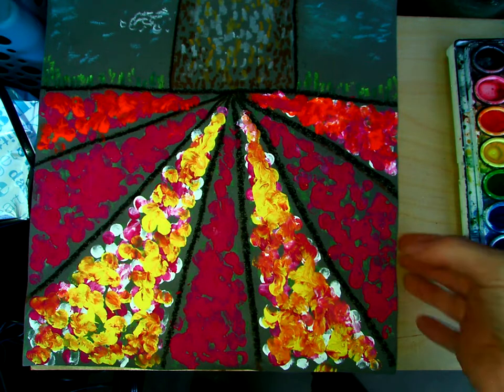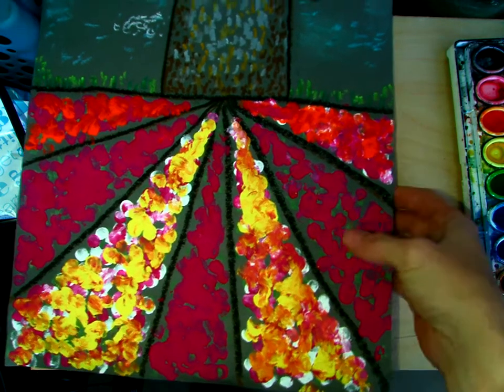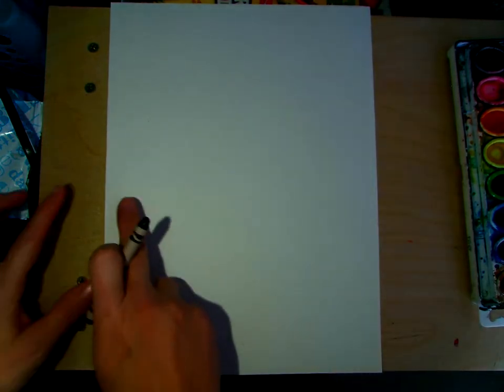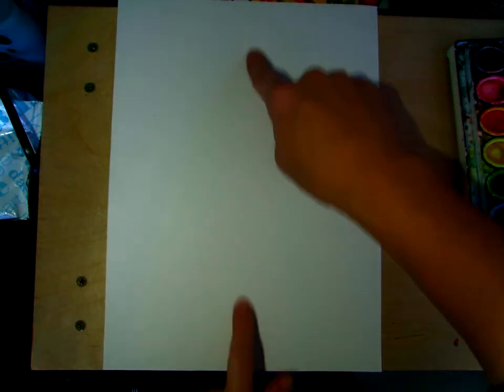Well, not everyone has access to tempera paint, so we're going to switch it up and do something a little bit different. You just need a black crayon for today. We're going to find the middle of our paper, and I do that by going like this.